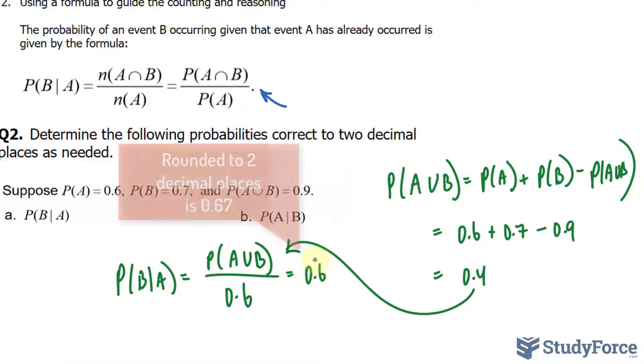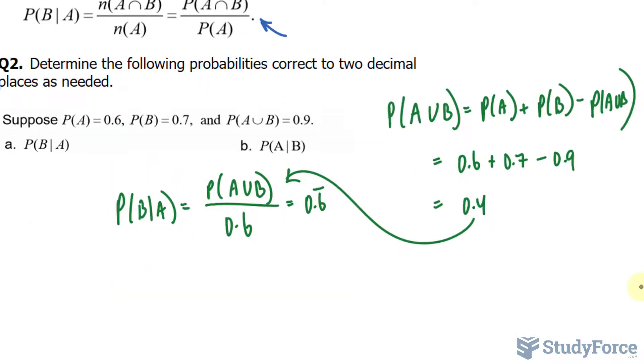0.6 repeating. Now the probability of A given B.